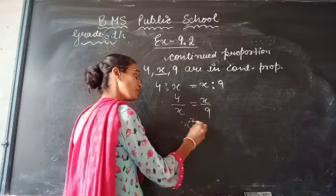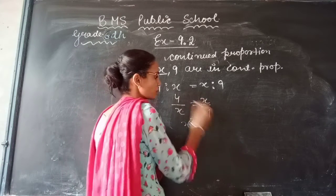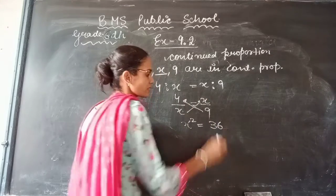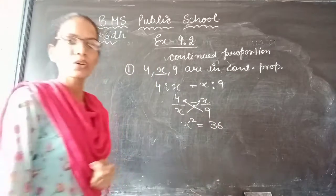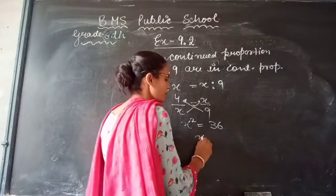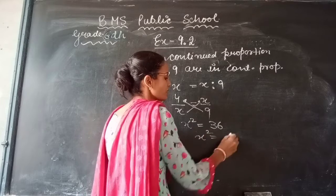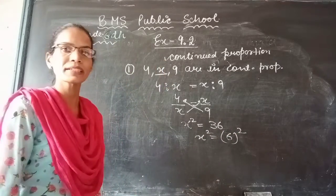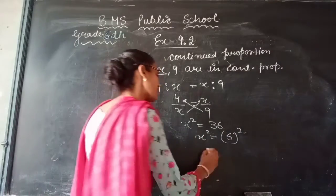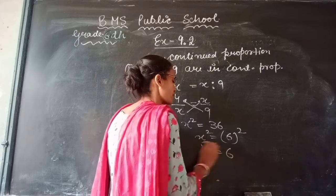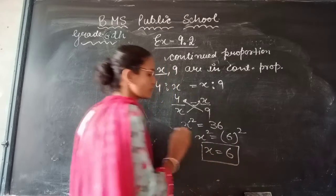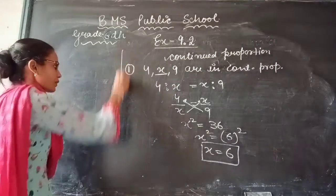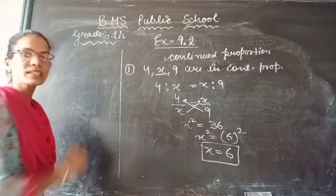So x squared equals 9 times 4, which is 36. Therefore x equals 6. This is your answer.